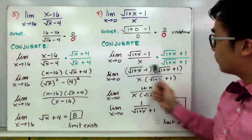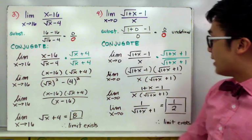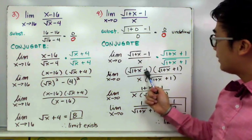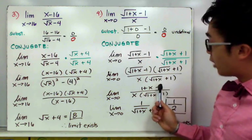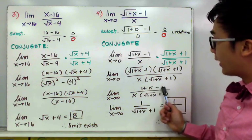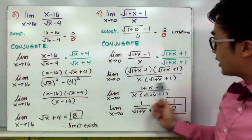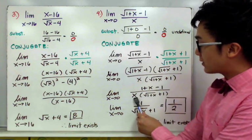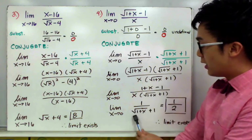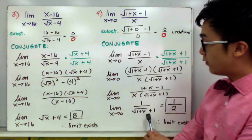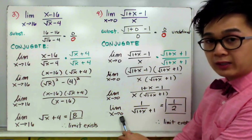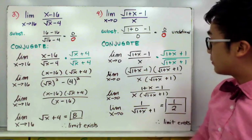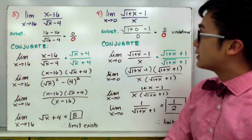Multiplying the conjugate pair in the numerator gives 1 plus x minus 1, and 1 minus 1 cancels to 0, leaving just x. We then cancel x from numerator and denominator, leaving 1 over square root of 1 plus x plus 1. By direct substitution with x equals 0, the limit equals 1/2. The limit exists because we used the conjugate to simplify the rational function.